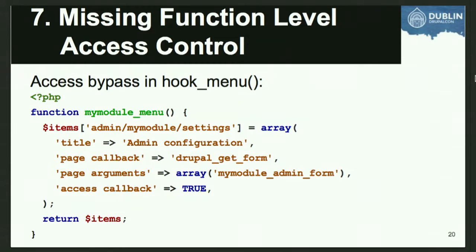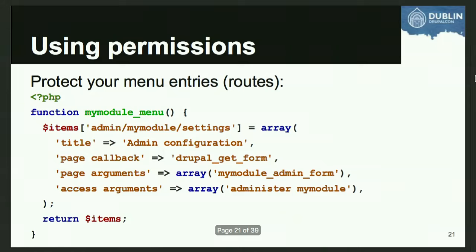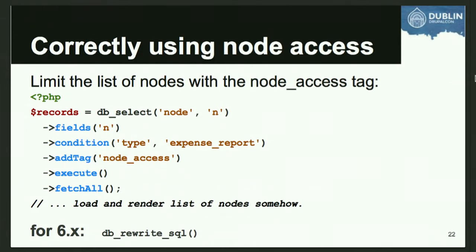Here we have an example of hook_menu in Drupal 7, and the last element is the access callback with a value of true. That is occasionally the right thing to do, but not in this example. What you probably meant to say is access_arguments with the value 'administer my module' - now this page 'admin/my-module/settings' is properly protected by a permissions check. The OWASP guidance is to actually use the access control that your framework provides. Similarly, for access control on entity listings in Drupal, you need the addTag('node_access') call, which triggers node access control to add SQL conditions and restrict access for people without the right grants.